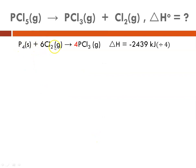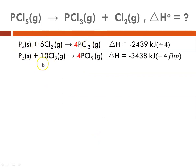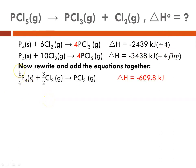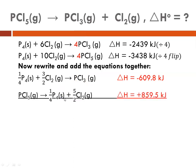Here is the first equation for the formation of phosphorus trichloride, and here is phosphorus pentachloride. Dividing the first one by four — including the delta H — gives a delta H of negative 609.8 kilojoules per mole. For the second one, since phosphorus pentachloride is one of our reactants, we reverse the reaction and divide by four. Reversing the reaction changes the sign of the delta H.